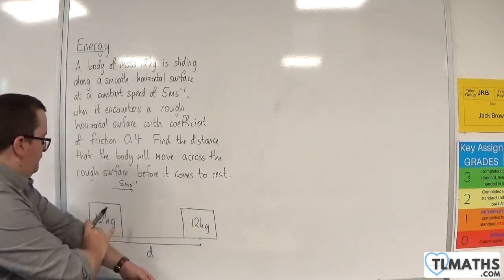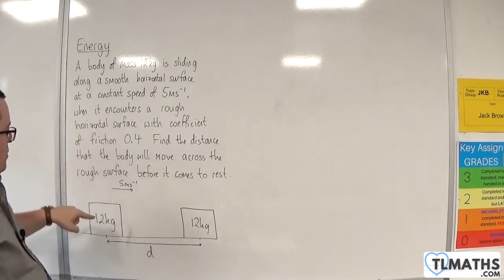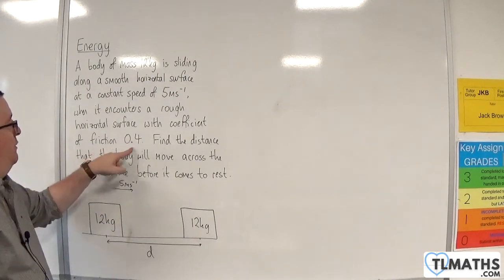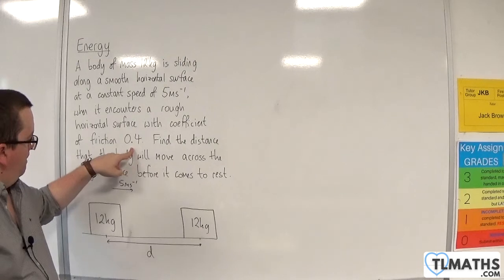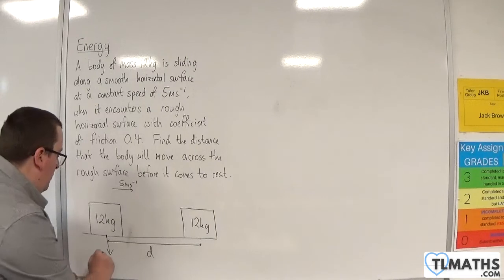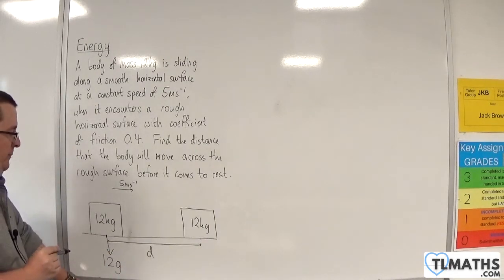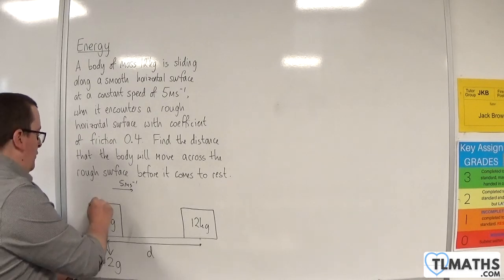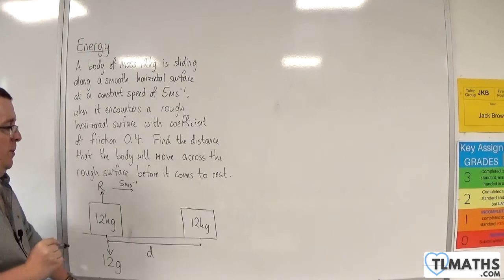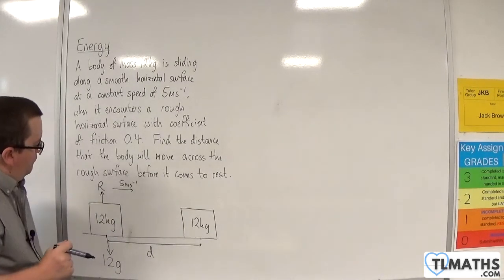Now that we know what's going on there, we need to think about how we're going to include the coefficient of friction of 0.4. We have the weight of the object as 12g working vertically downwards. We then have the normal reaction force R, which is going to work vertically upwards.